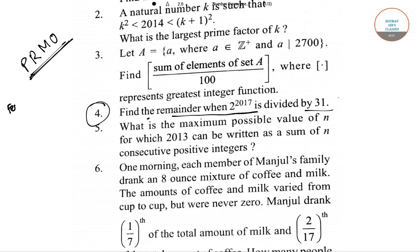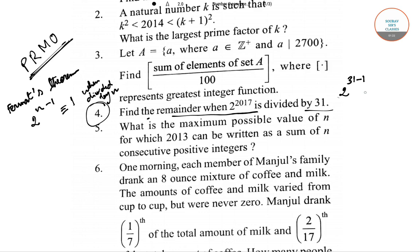The theorem is known as Fermat's theorem. According to Fermat's theorem, 2 to the power n minus 1 leaves a remainder of 1 when divided by n. So here, 2 to the power 31 minus 1, which equals 2 to the power 30, will give a remainder of 1 when divided by 31.